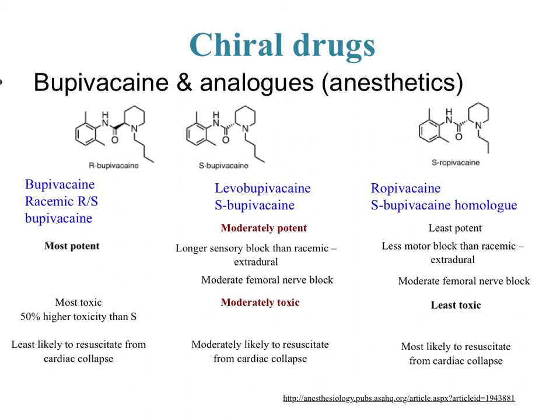As with any drug, it's always a balance between getting the desired effect and managing side effects. If side effects are really dangerous you won't use that version, but if the clinical situation demands a longer sensory block, you might choose the S alone. If efficacy needs are moderate and safety is the priority, the homologue ropivacaine would be preferred. This example illustrates the difference between racemic, specifically chiral, and homologue approaches to drug design.